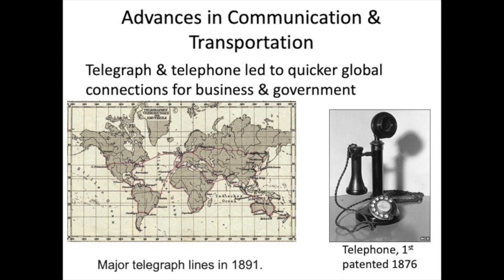Here we can see all the major telegraph lines around the world that existed in 1891, making the world smaller and more connected. Already in 1858, North America and Europe were connected by telegraph lines under the Atlantic Ocean. Communication of information that previously took 10 days now took only a few minutes.